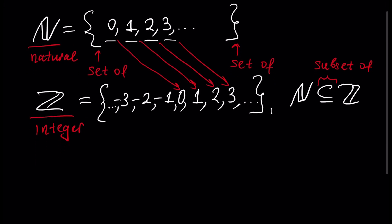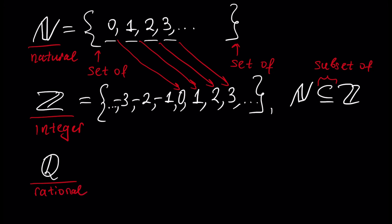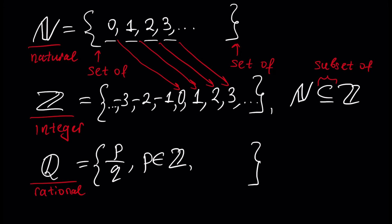Next, we define the concept of rational numbers. Rational numbers, denoted as Q, is the set where each element can be represented as a fraction p over q, where p is an integer and q is a natural number.